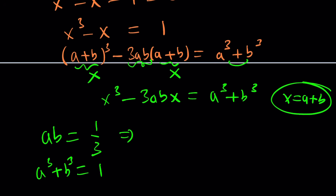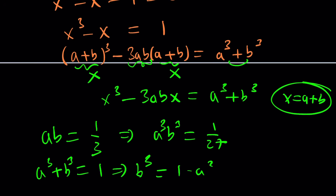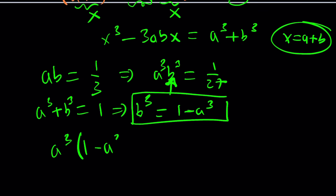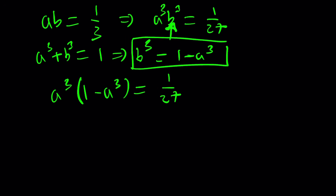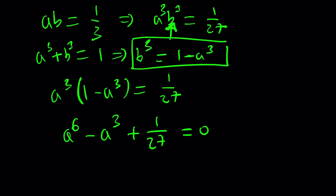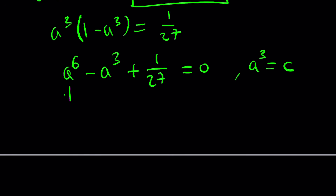If you cube both sides of ab equals one-third, you get a cubed times b cubed equals one over 27. From a cubed plus b cubed equals one, isolate b cubed as one minus a cubed, then substitute to get a cubed times one minus a cubed equals one over 27. Distributing and putting everything on the same side gives a to the sixth minus a to the third plus one over 27 equals zero.